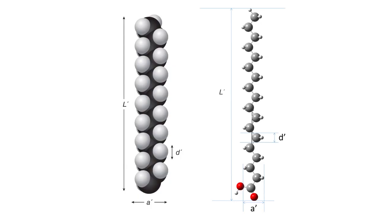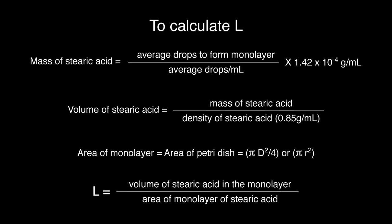Measure parameters of models. Two models will be given. With the ruler, measure the parameters L prime, A prime, and D prime of both models. To decide which model to use, calculate the length of the stearic acid molecule.